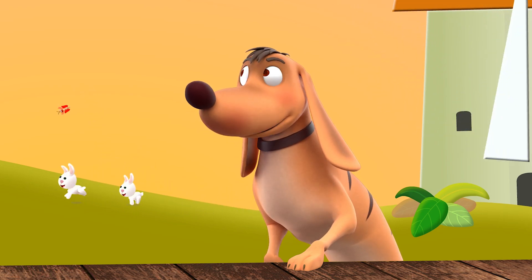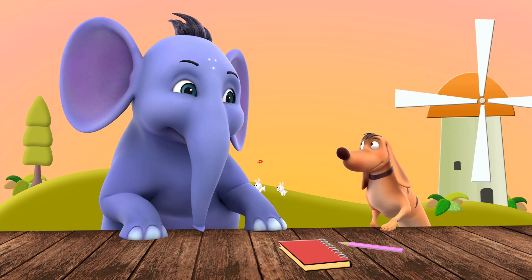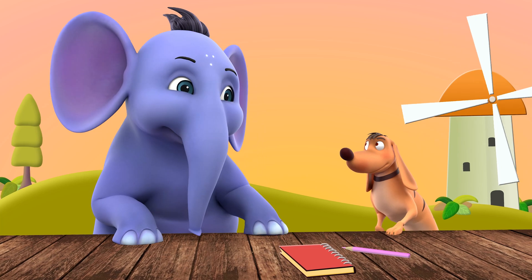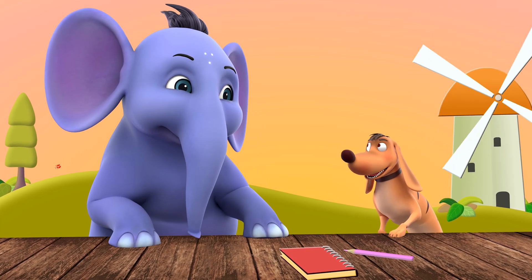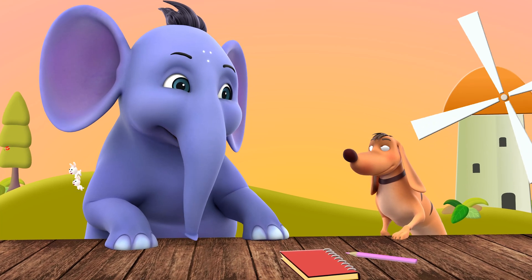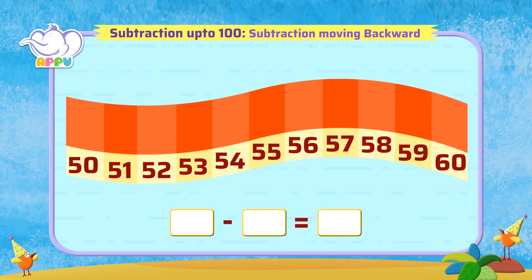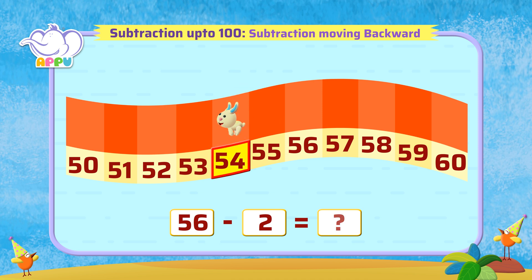Subtraction is taking away, right? Yes. You can also count backwards while doing subtraction. Let's try. You mean count and move backwards? Yes, let's do it. Let's look at a few examples. What is 56 minus 2? Count backwards by 2, which is 55, 54. The answer is 54.